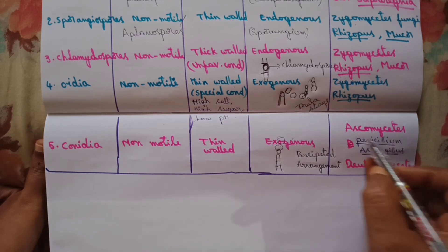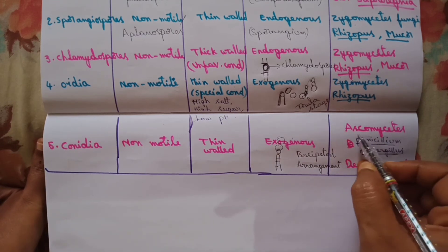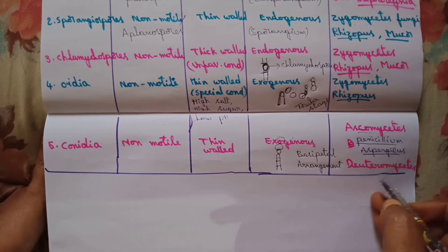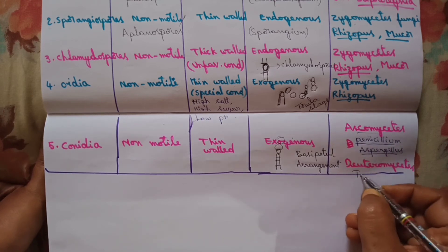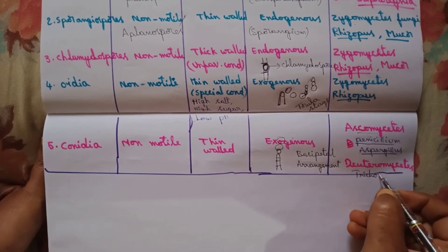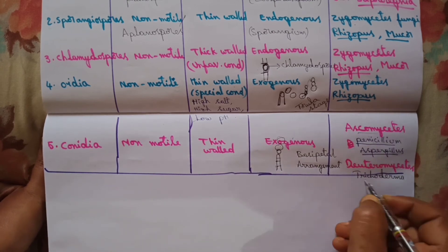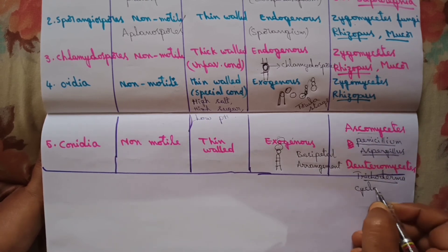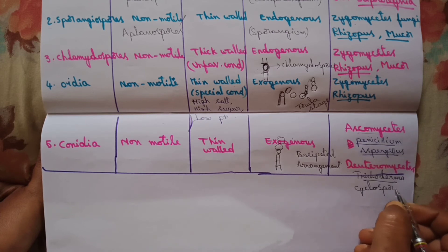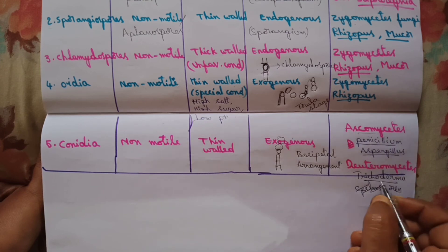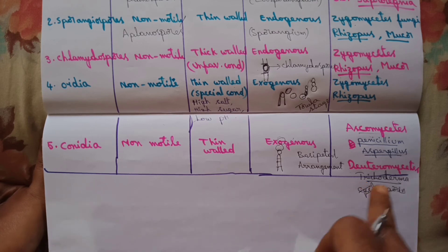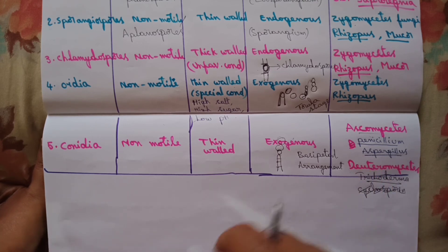Examples of fungi producing conidia are ascomycetous fungi and deuteromycetous fungi. Examples of ascomycetous fungi are Penicillium and Aspergillus. Deuteromycetous fungi include Trichoderma. Trichoderma is the fungus belonging to the class deuteromycetes which produces conidia, and it also produces a product called cyclosporine. These are the different types of asexual spores produced by fungi.